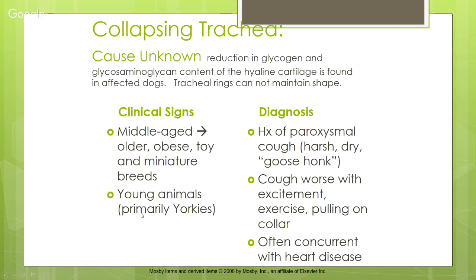Collapsing trachea is most often seen in middle-aged, older, obese toy and miniature breed dogs. The cause is unknown — possibly a reduction in glycosaminoglycan content of the hyaline cartilage, which makes up the tracheal rings. The best analogy is a straw collapsing when sucking a thick shake — if the tracheal ring is weak, air cannot move through the trachea effectively.